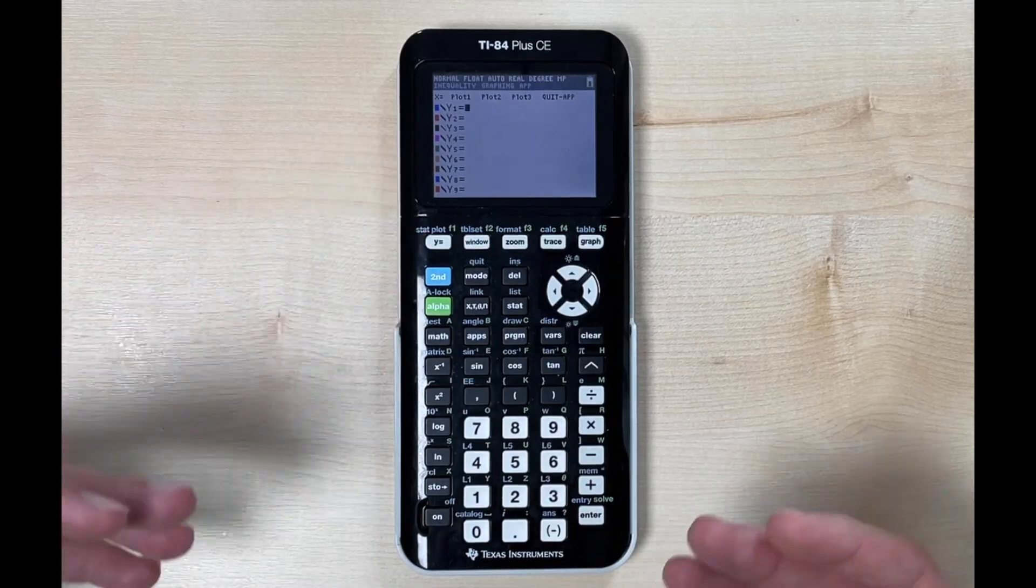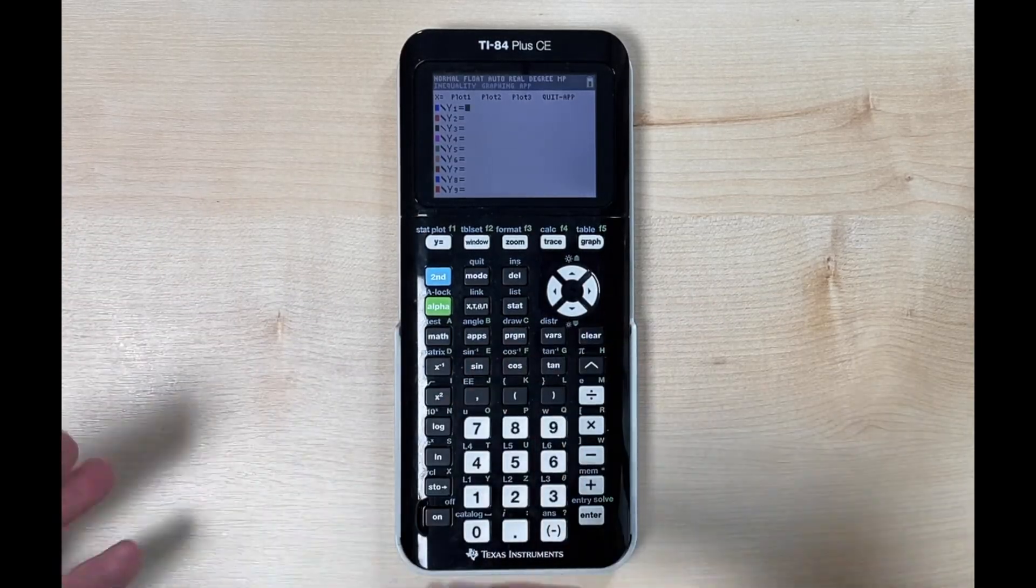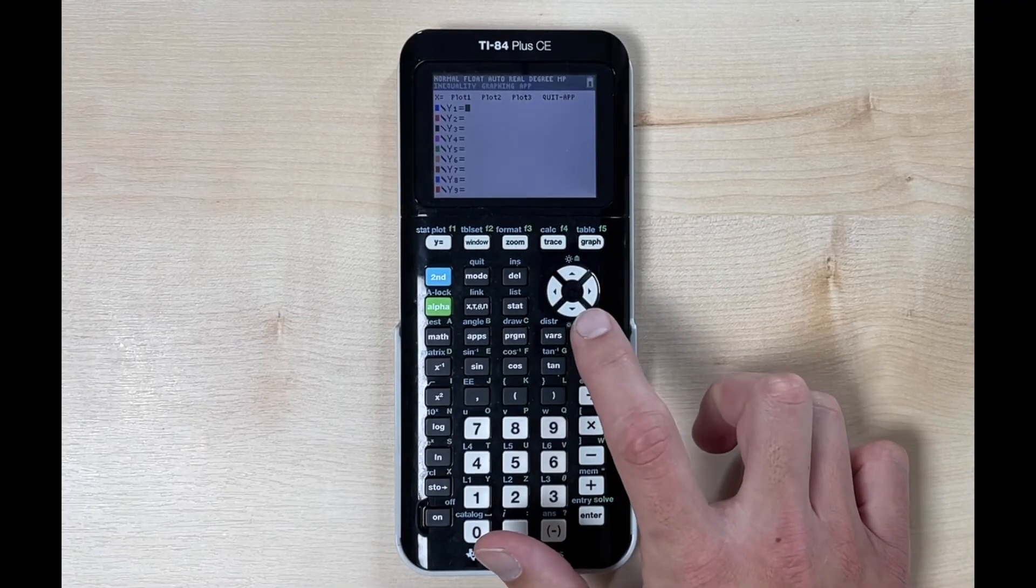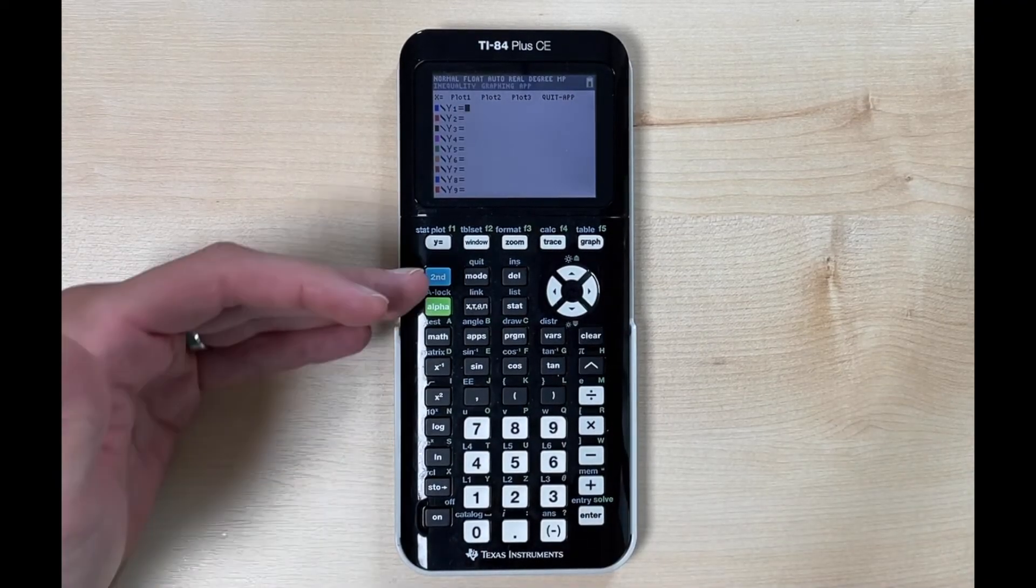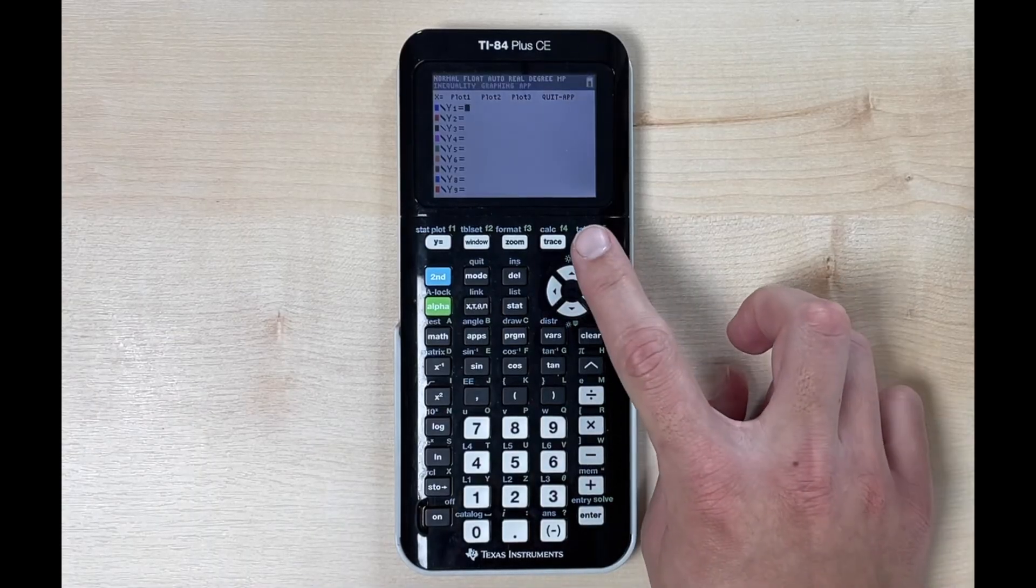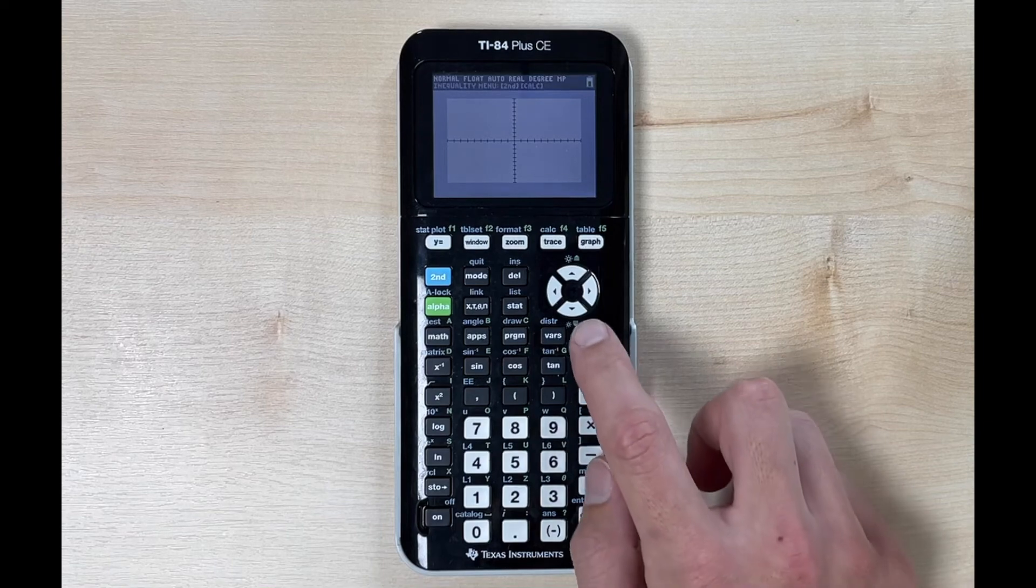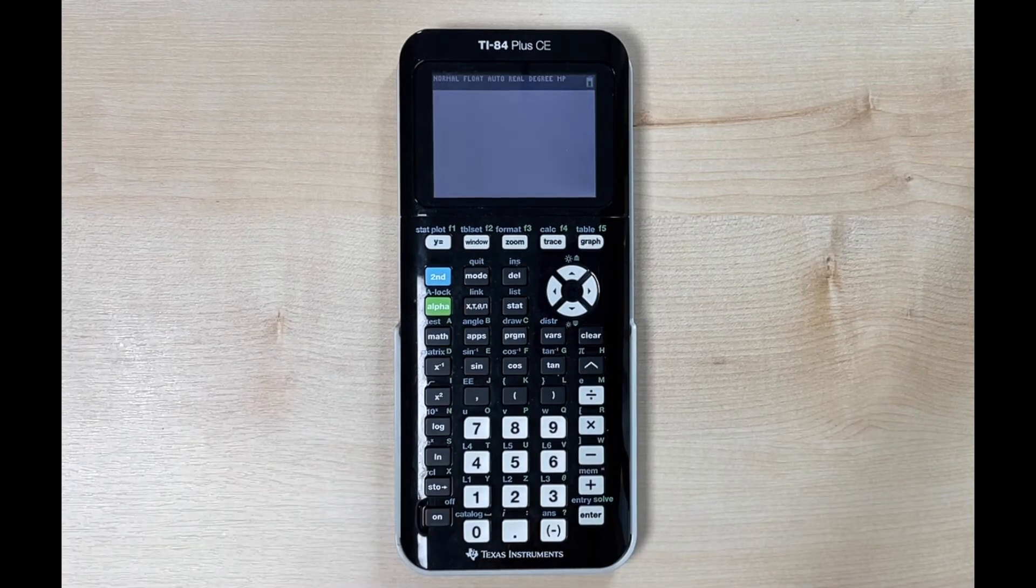If you're in y equals and you're trying to get back to your home screen just to do some basic calculating notice when I hit clear nothing happens. In order for you to get back to your home screen go ahead and hit graph and then it'll bring up your coordinate plane and at this point you can hit the clear button and it'll take you back to your home screen.